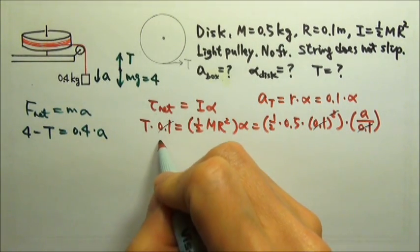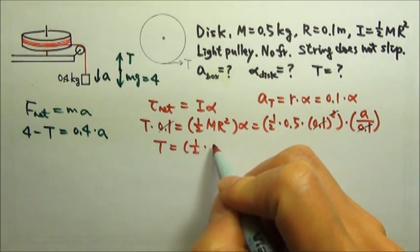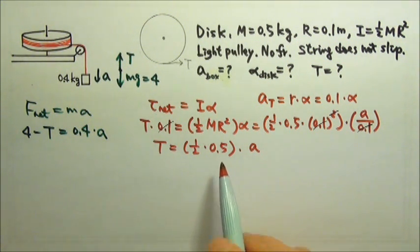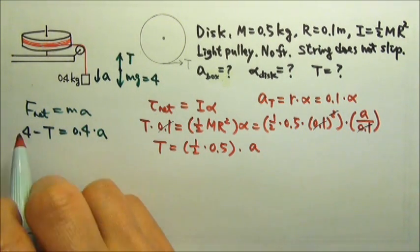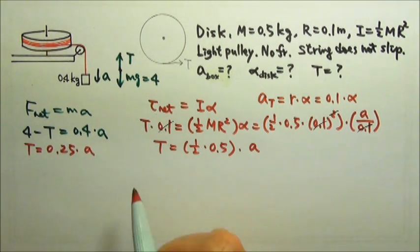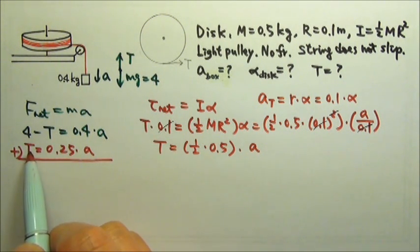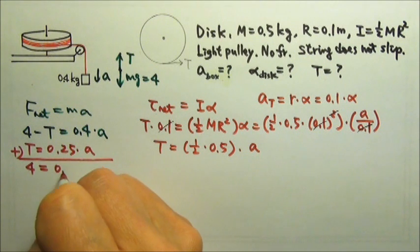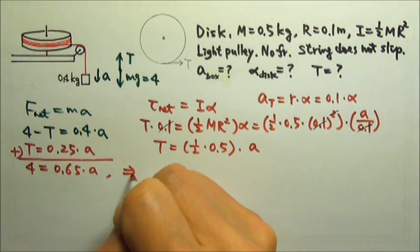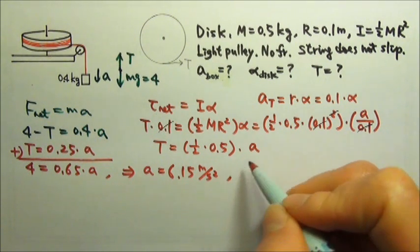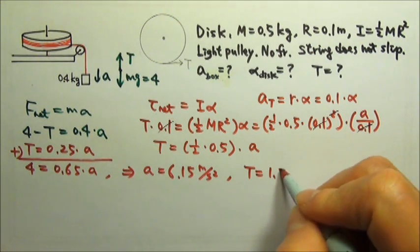The torque equation becomes T = 0.25a. We now have two equations with two unknowns, T and a. Stacking them together and adding so the tension cancels: 4 = 0.4a + 0.25a = 0.65a. So acceleration equals 6.15 m/s². To find tension, we plug the acceleration back in and find T = 1.54 newtons.